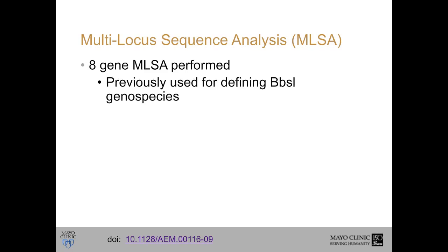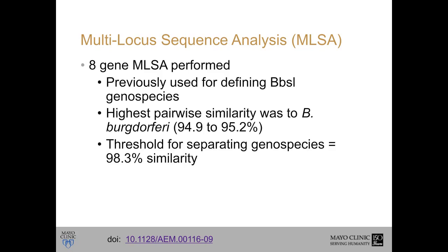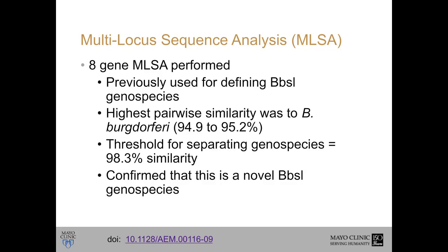We also did multi-locus sequence analysis — amplifying multiple genes and comparing them to other Borrelia burgdorferi sensu latu genospecies to see how similar our organism is to known organisms. This was previously used for defining Borrelia burgdorferi sensu latu genospecies. The highest similarity was to Borrelia burgdorferi, but the cutoff for separating genospecies is anything less than 98.3% similarity. At the closest pairwise similarity we were at about 95%, confirming this was a novel Borrelia burgdorferi sensu latu genospecies.